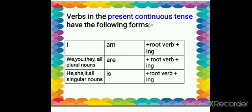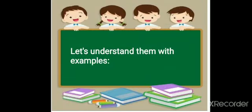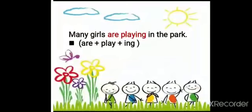With he, she, it, all singular nouns, we will use 'is' plus root verb plus -ing. Let's understand them with examples. Many girls are playing in the park. In this sentence, 'girls' is a plural noun, so we will use 'are' plus root verb, that is 'play,' plus -ing in present continuous tense.